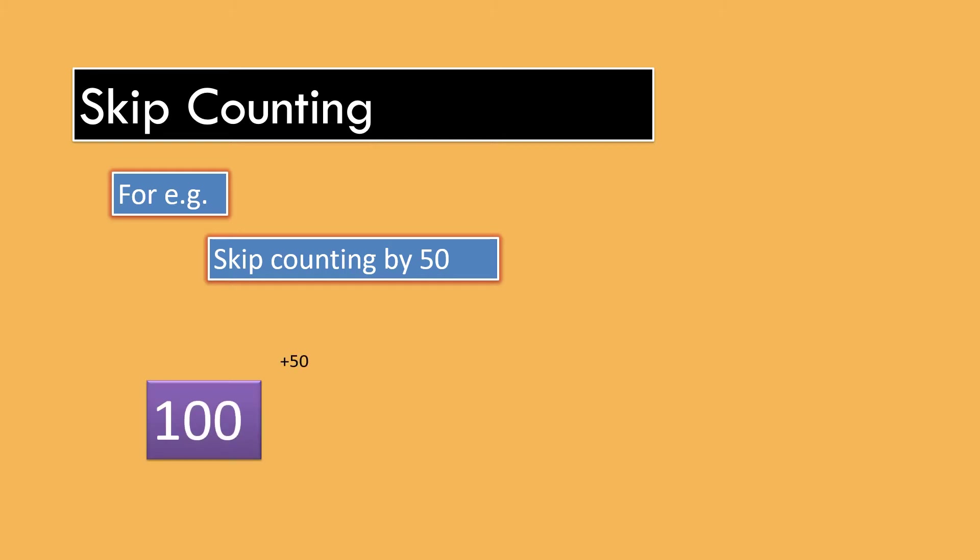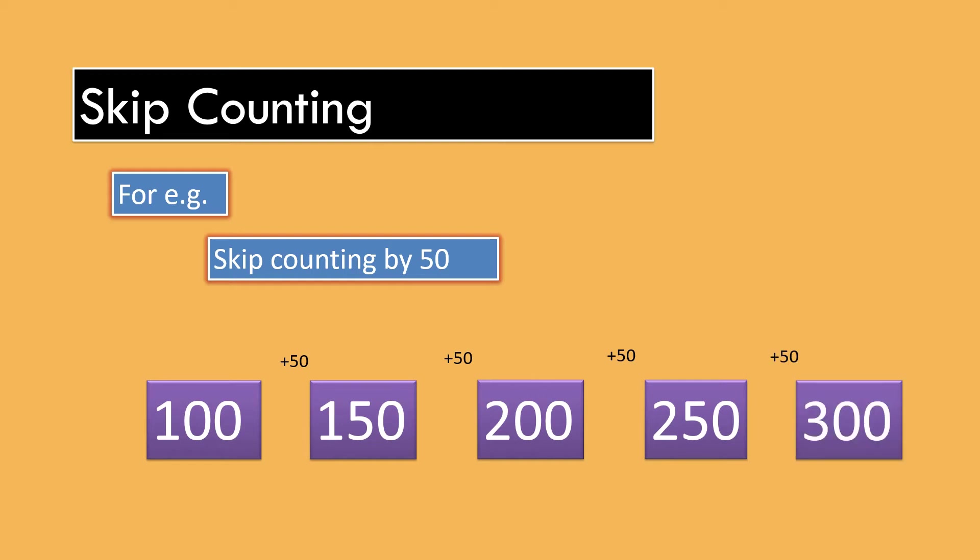Another example of Skip Counting by 50. 100 plus 50 is 150, plus 50 is 200, plus 50 is 250, plus 50 is 300.